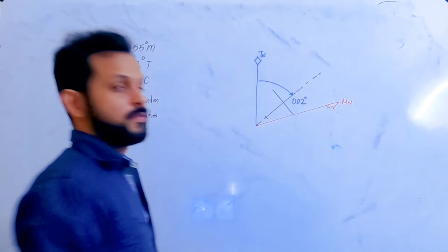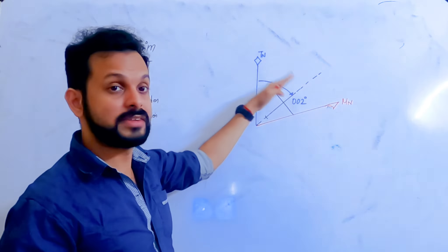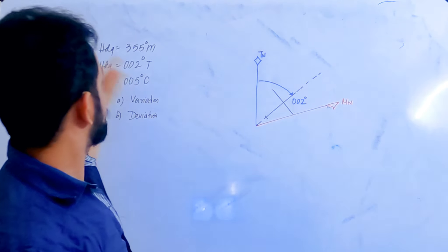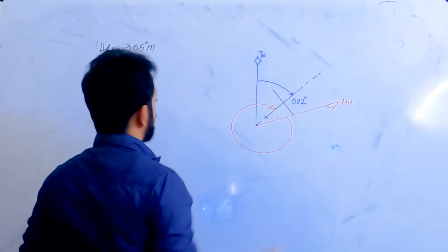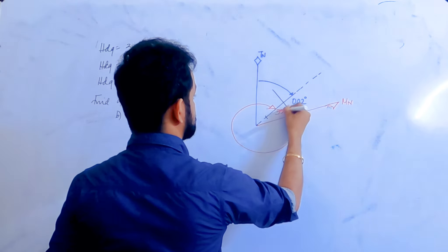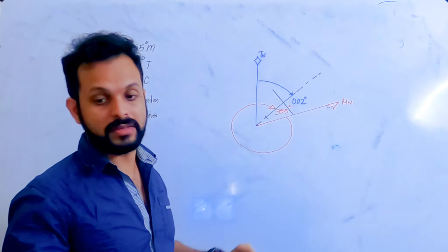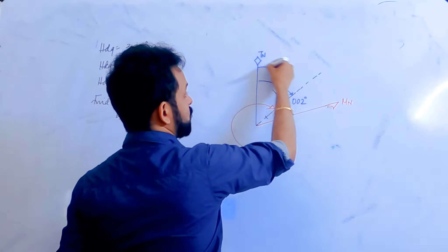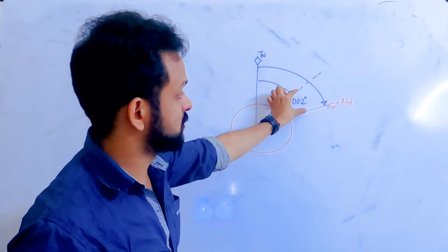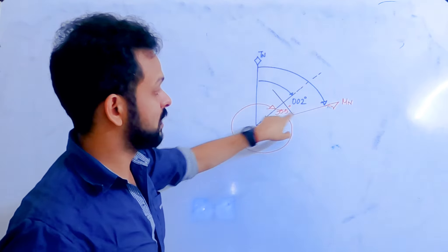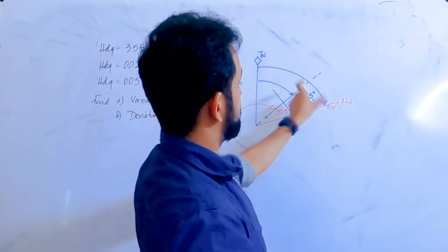This often confuses people because they expect true north, magnetic north, and compass north all on one side. But here the aircraft heading is between true north and magnetic north. Measuring clockwise from magnetic north to the heading gives 355° as the magnetic heading. The angular difference between true north and magnetic north — measured from true north — is 2° plus 5°, giving a total of 7°.